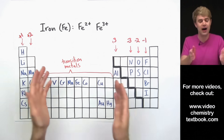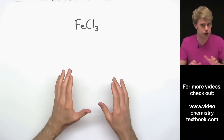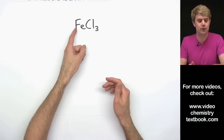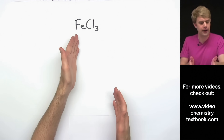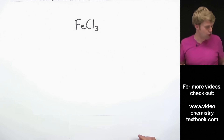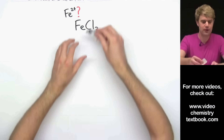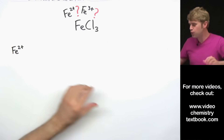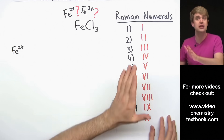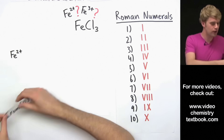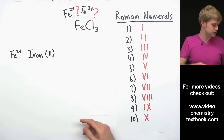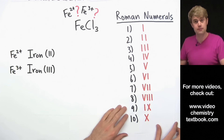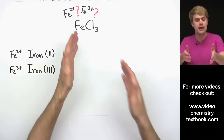Some of them can even make 4 or 5 different ions, each with a different charge. So these different charges really come into play when we want to name a compound that contains a transition metal. For FeCl3, we can't tell right away whether the Fe is Fe2+ or Fe3+. We can distinguish between these two ions by using Roman numerals: the Fe2+ ion is called iron(II), and the Fe3+ ion is called iron(III).